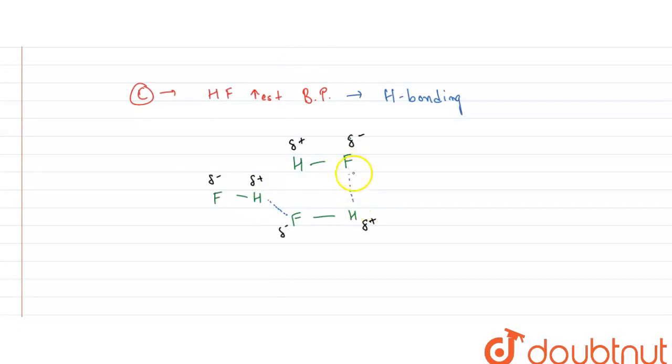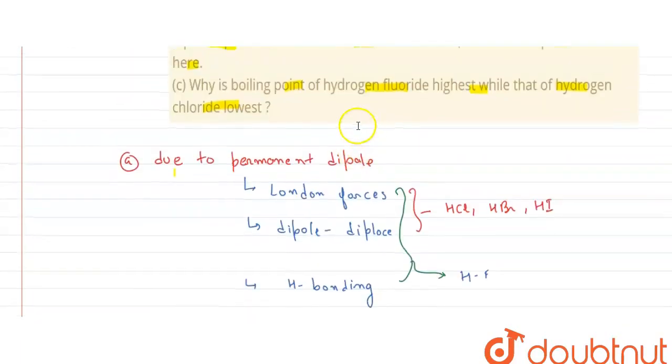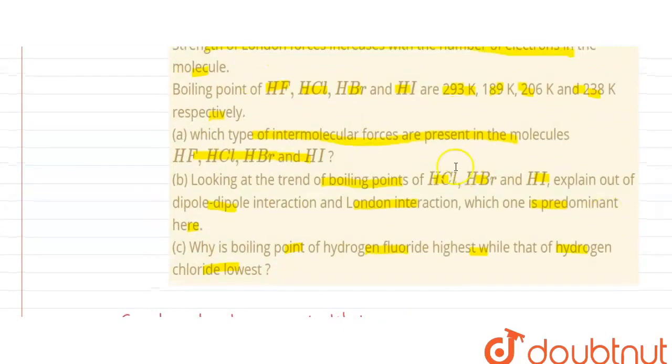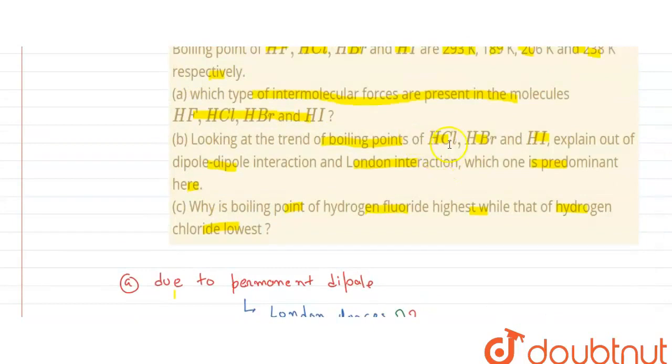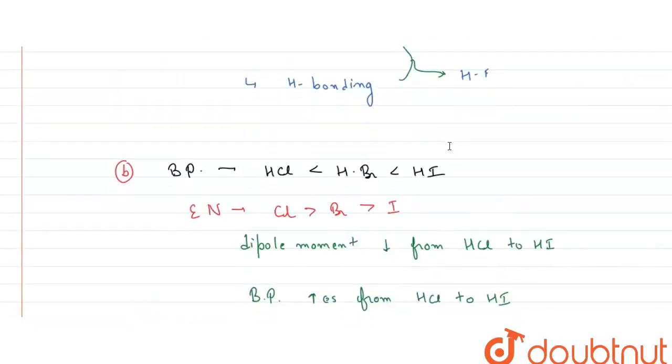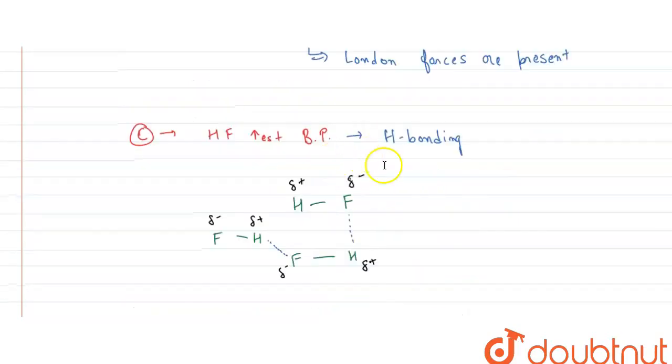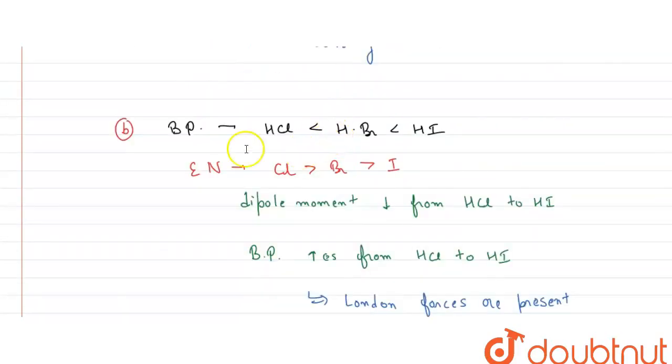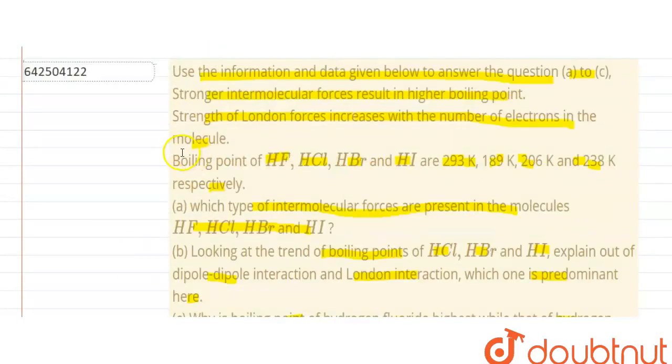So because of this intermolecular hydrogen bonding, the boiling point of HF is highest. And since this is not present in HCl, HBr and HI, therefore they have less boiling point. And the reason for hydrogen chloride to be having the lowest boiling point is because the dipole moment is highest and because of which boiling point decreases. So with this we have completed all the three parts and with this the entire solution is completed. Thank you.